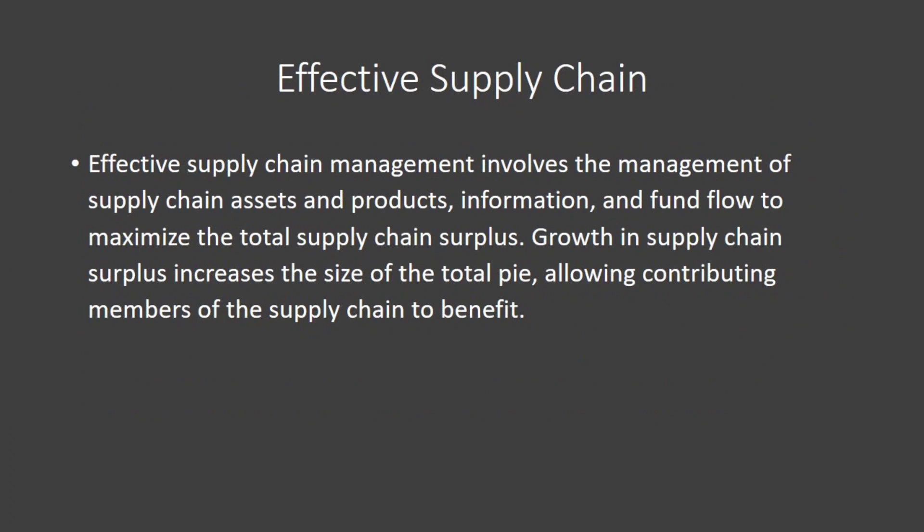Effective supply chain management involves the management of supply chain assets and the flow of products, information, and funds to maximize the total supply chain surplus. Growth in supply chain surplus increases the size of the total pie, allowing all contributing members of the supply chain to benefit.